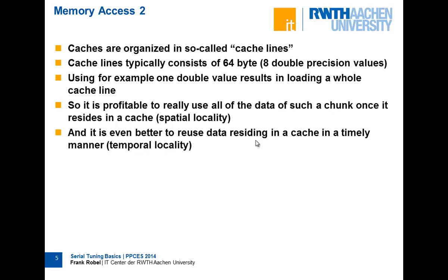You have to use the cache implicitly by the way you access the main memory. So let's first think about how the cache works. If you want to load one element from the main memory, you have to load a complete cache line. This cache line is most times 64 bytes. So if your program uses double precision values, you have to load eight of them. And you can profit from this if you use all eight values.